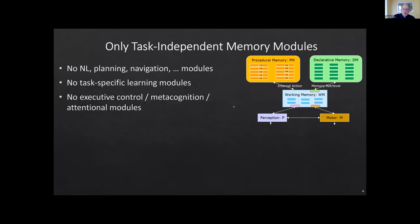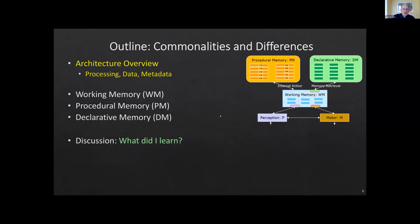There are no task-specific learning modules — all learning modules are very general. There's also no executive control, metacognition, or attentional modules. We see those activities as just more processing between procedural memory, working memory, declarative memory, perception, and motor — not special processing modules. There might be special data made available, but not distinct processing types. The talk will cover an architecture overview, then working memory, procedural memory, and declarative memory, with commonalities and differences between SOAR and ACT-R, and finally what I learned.